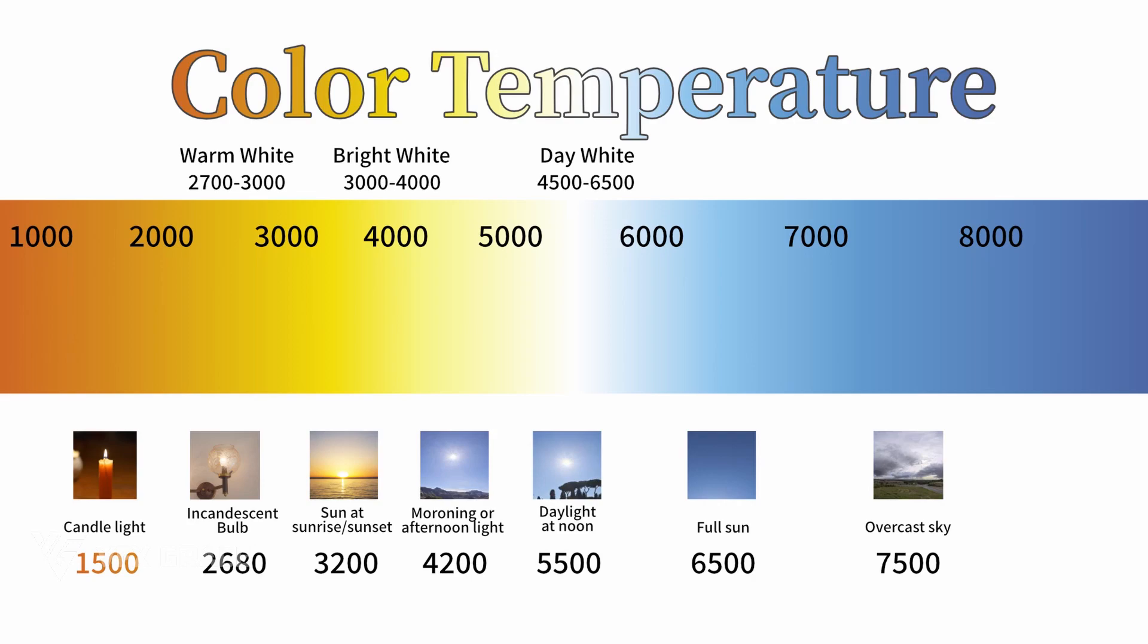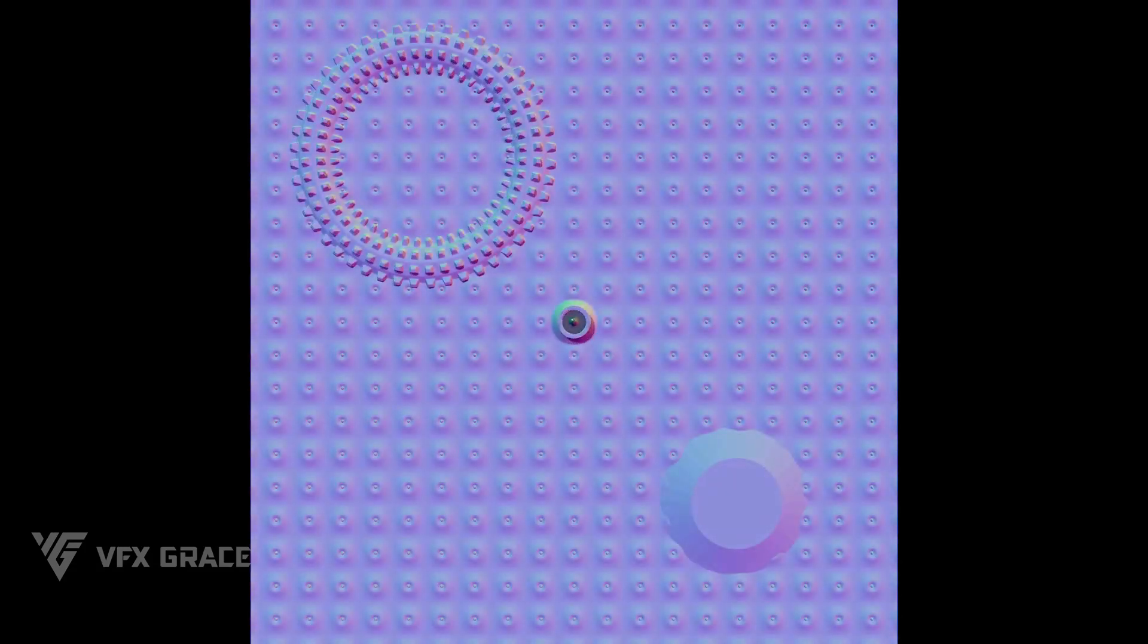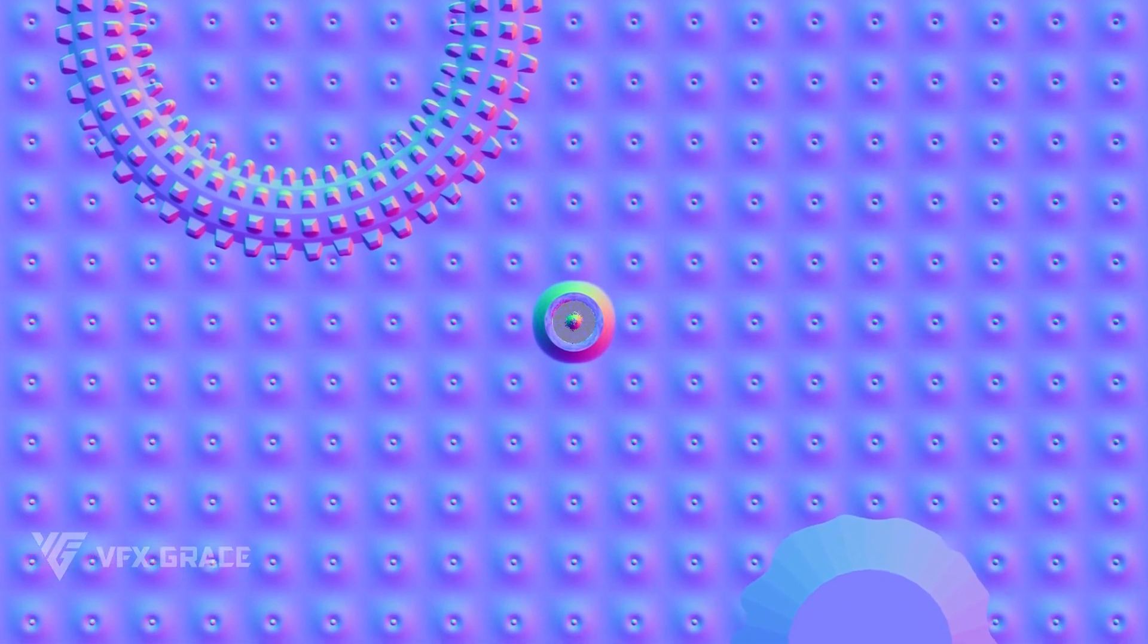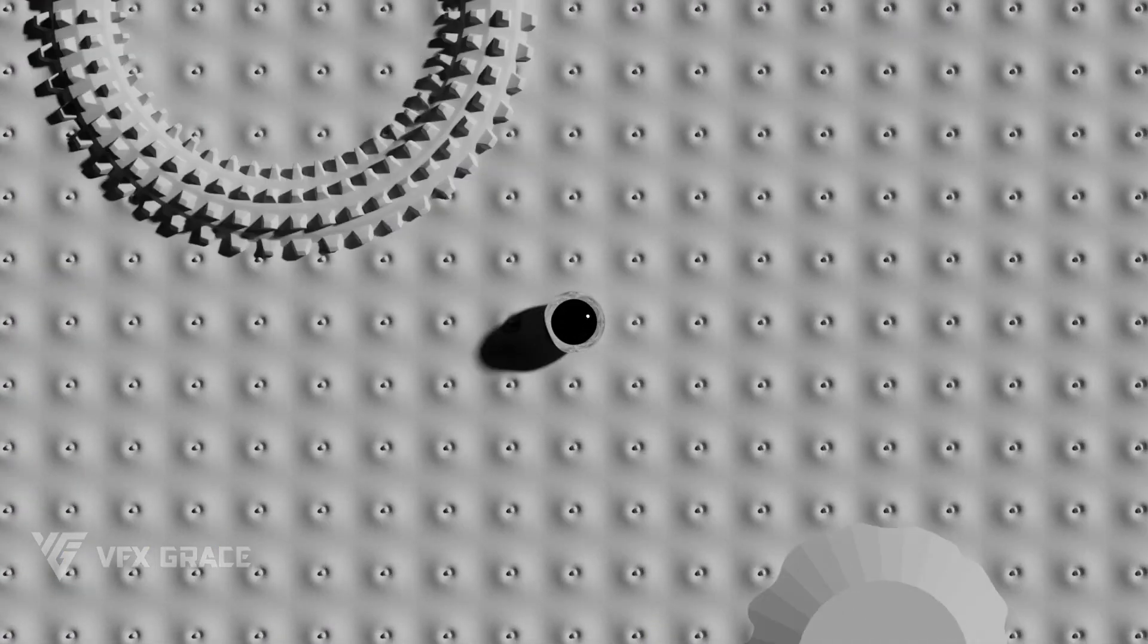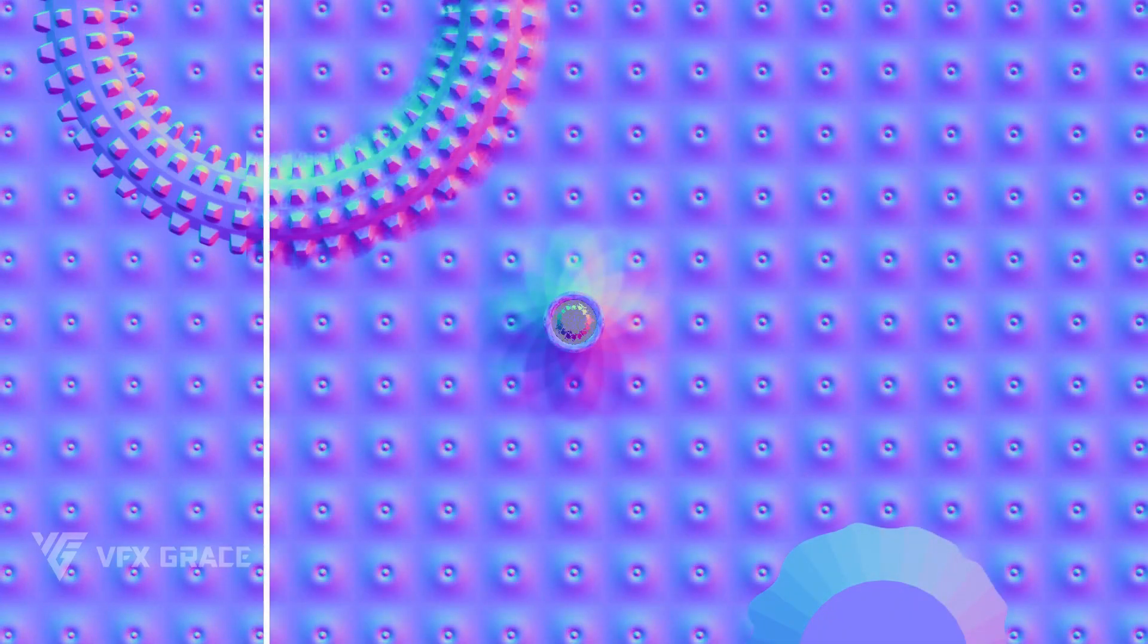And now I'll say something about shadows. The higher the light source to the object, the shorter the shadow is, and the flatter the normal map will be, just like this one. When the light source is lower to the object, the shadow gets longer and the normal map will be more stereoscopic. As we can see, the second one has a higher saturation.